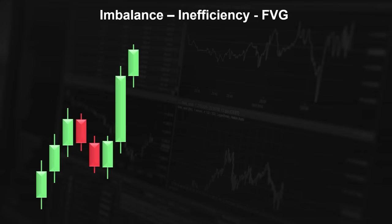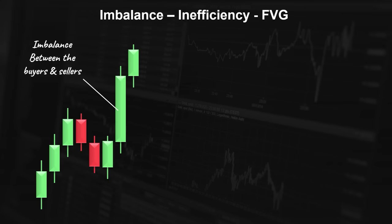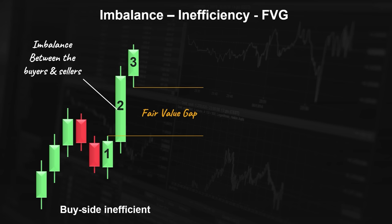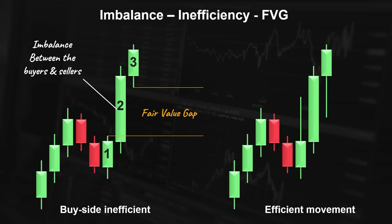Imbalance, inefficiency, and fair value gaps are highly similar concepts. When smart money enters the market, it creates imbalance between the buyers and sellers, causing significant price movements with gaps between the wicks. The price is buy-side inefficient and we have fair value gaps between the wicks. The fair value gap is a three-candlestick pattern where the wicks do not meet. When the price moves significantly and leaves fair value gaps behind, the price usually returns to these areas to fill the gap and restore balance. Combining this with the supply and demand concept allows us to identify potential trading opportunities.